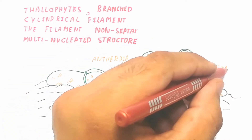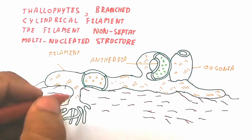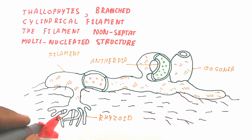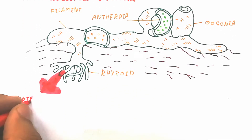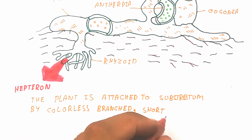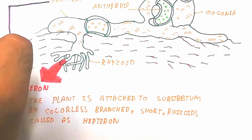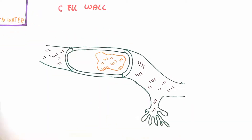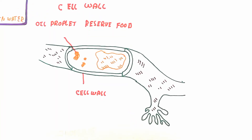The rhizoid is known as hapterone. The antheridium is the male reproductive organ and the oogonium is the female reproductive organ. Specialized reproductive organs are present. The plant is attached to the substratum by colorless branched rhizoids called hapterone. The cell wall is made up of cellulose and pectin. Cellulose is formed by sugar molecules joined by alpha-1,4-glycosidic bonds, and pectin is another cellular composition.